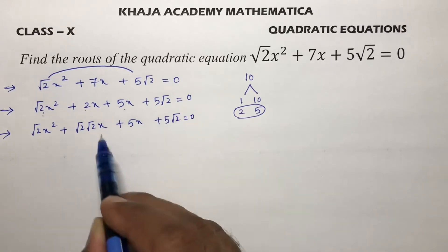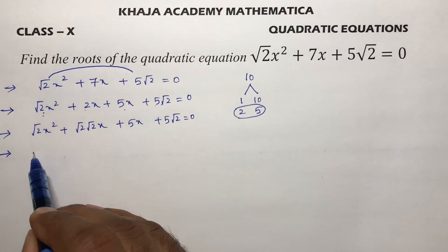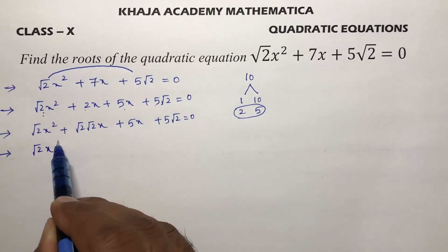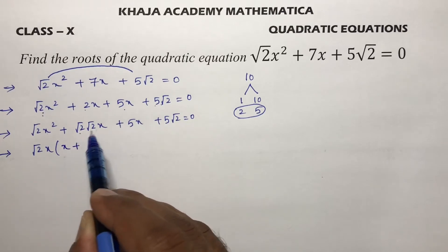This 2 you can write √2x², 2 you can write as √2 into √2. If you can do directly, you can take directly √2 common, but it will be clear like if you do it.